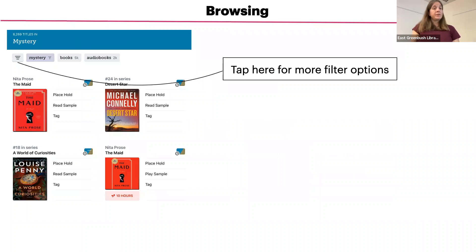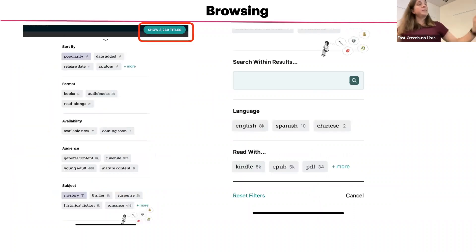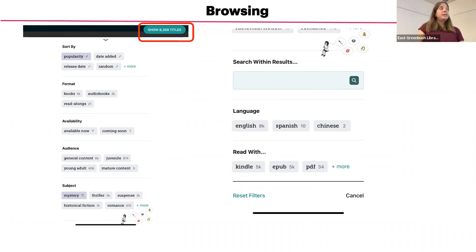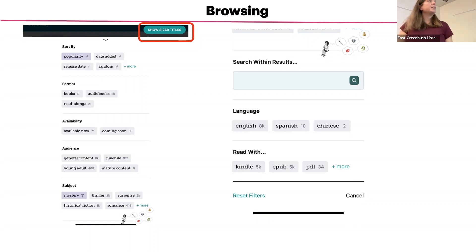If you would like to narrow it down further, you can tap on the filter button again, and that will bring up a menu on the side. You can tap on the options you would like to apply — for example, you can choose to see only titles that are currently available, filter by reading level such as juvenile or young adult, and you can select more than one subject. If you scroll down further, you will get more options such as language and format.